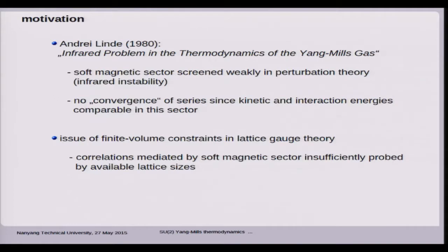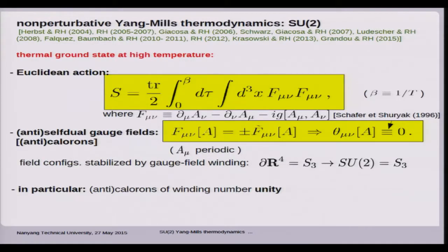First, very brief motivation. Why is there a need for a non-perturbative approach to SU2 Yang-Mills theory? Small coupling expansions are plagued by instability in the soft magnetic sector. Soft magnetic gluons are screened too weakly to give sensible non-alternating convergence of the perturbation series. There are also finite spatial volume issues in lattice simulations at high temperatures. It's very much justified to look at the theory non-perturbatively, constructing a thermal ground state out of topologically non-trivial configurations.